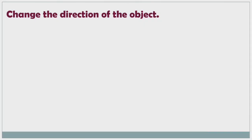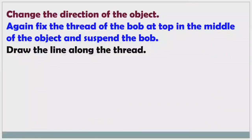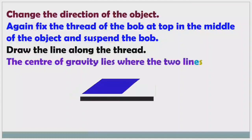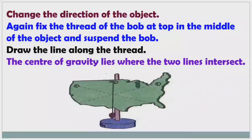Change the direction of the object, fix the thread and bob again at the top in the middle, suspend the bob, and draw another line along the thread. The center of gravity lies where the two lines intersect. When we suspend a plumb line or bob, it always points downwards. This is the procedure to find the center of gravity for any irregular or regular shaped object.